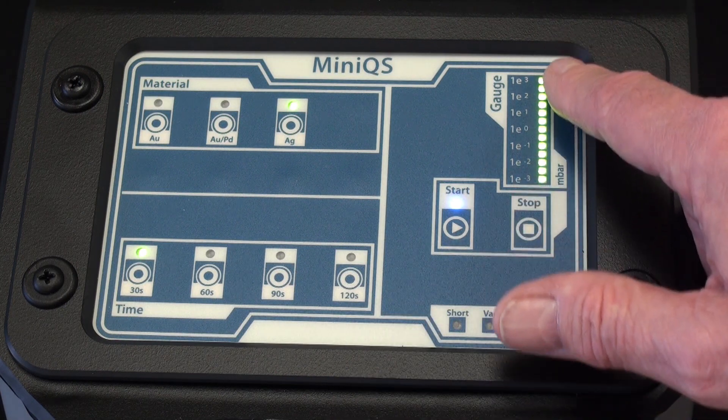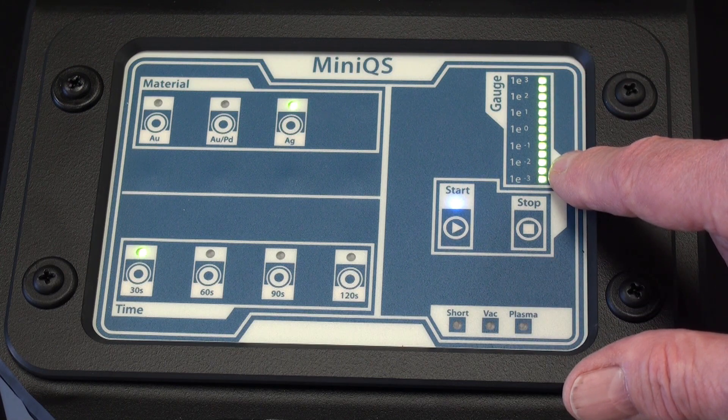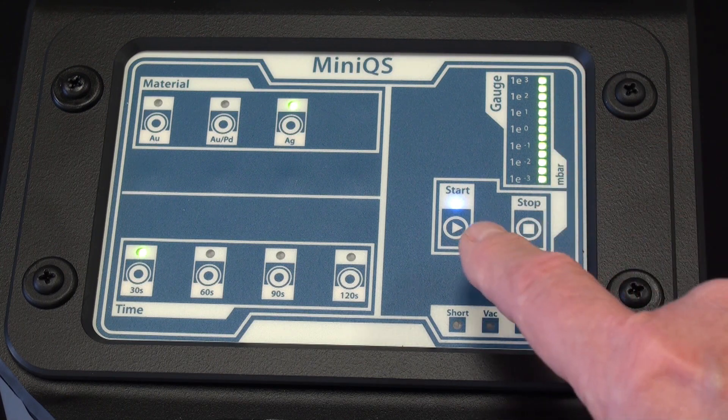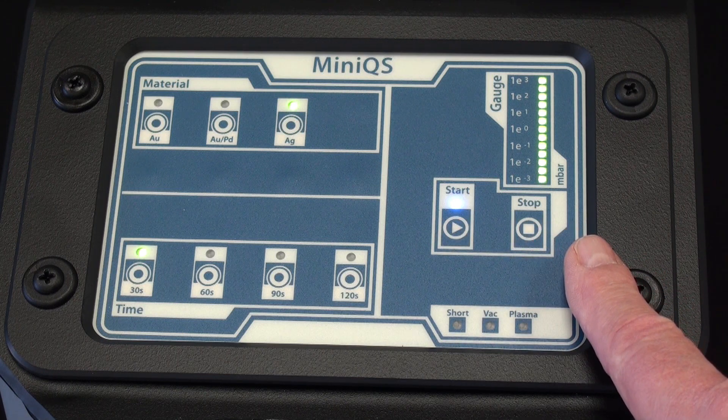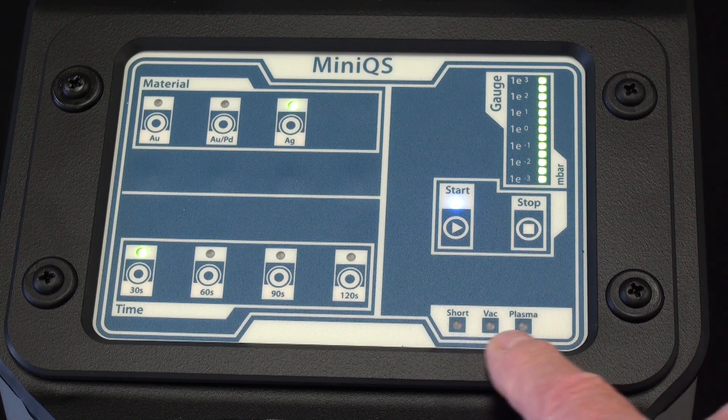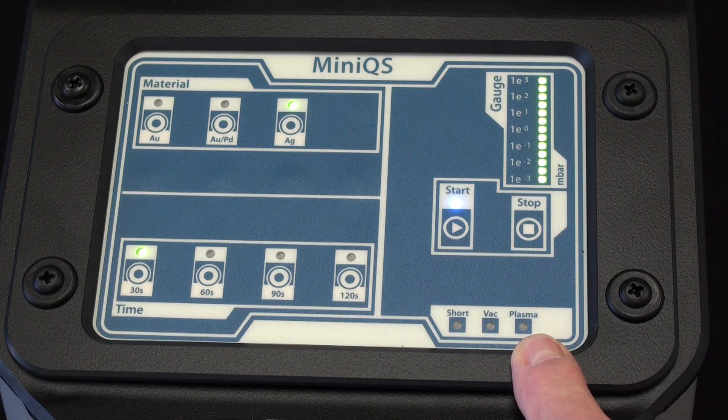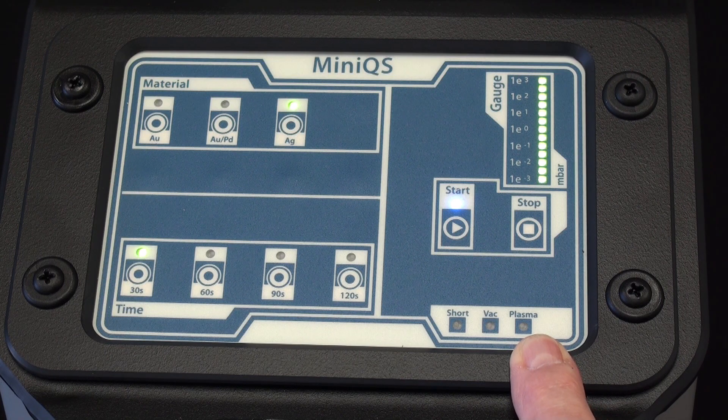Over here we have the vacuum meter, so this is atmospheric, as it goes down it gets to a higher vacuum. And we have a simple start/stop button which puts the instrument into function. Then we have three indicators down here which indicate a fault condition exists.